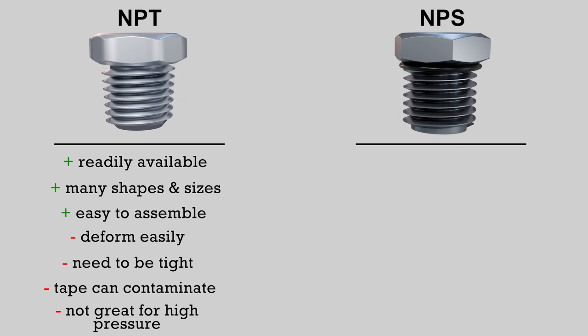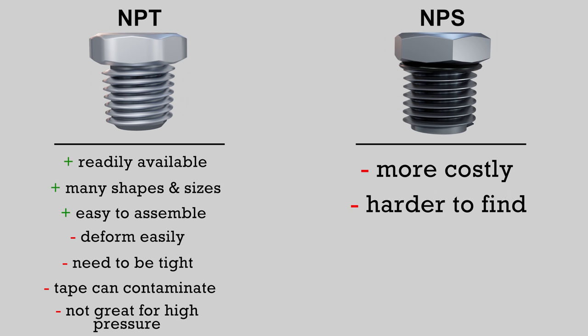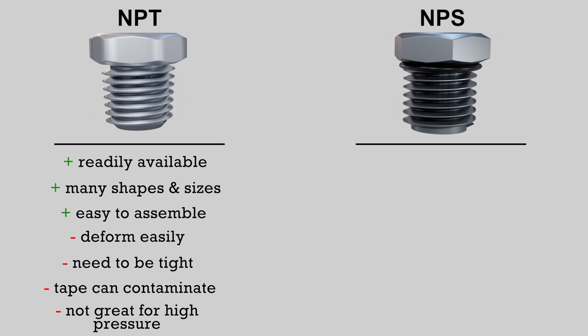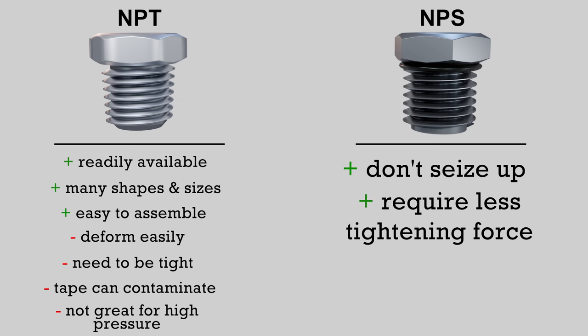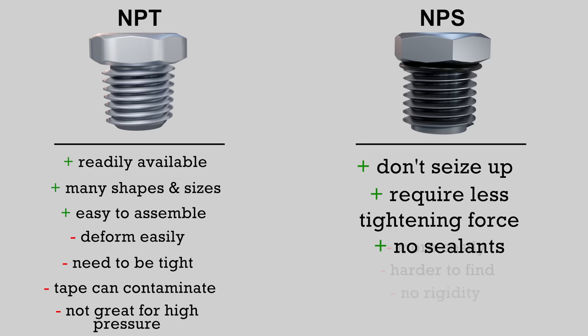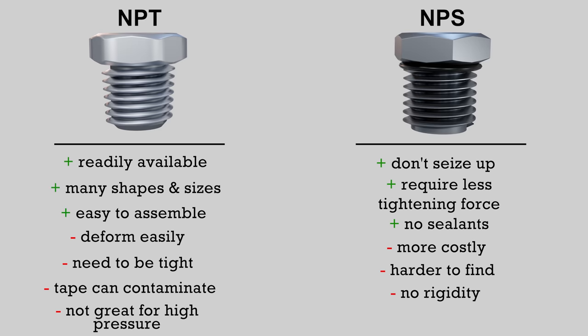As for straight or parallel threads, they are a tad more expensive. They are harder to access as you won't always be able to find flared or specialized o-ring fittings at your big box stores. And they don't give body or rigidity to a system like tapered threads do. What is nice about them is that they don't seize up like NPT threads do as they have a looser fit, they don't require as much force to get a leak-free connection, and they don't require any sealants, making for a cleaner connection and less chance of contamination. And that covers it for this video.